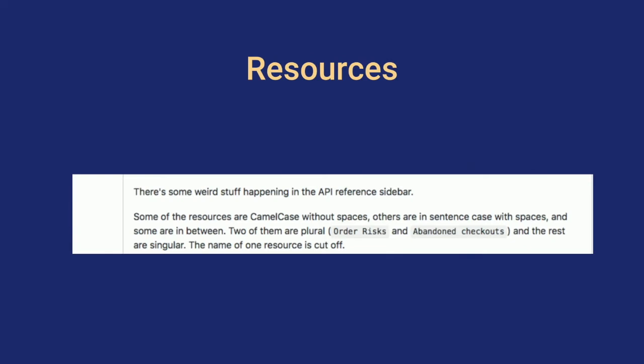This is an excerpt from an issue I happened upon in our repo on day one or two of my job. There's some weird stuff happening in the API reference sidebar. Some of the resources are in camel case without spaces. Others are in sentence case with spaces. Some are in between. Two of them are plural — order risks and abandoned checkouts — and the rest are singular.